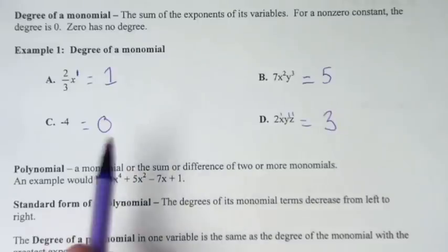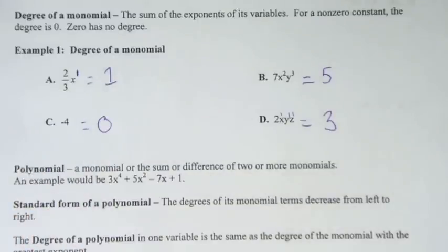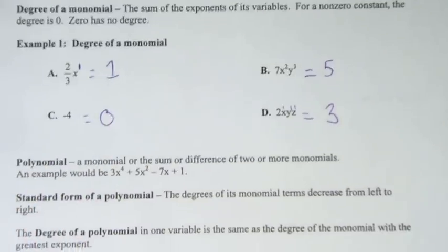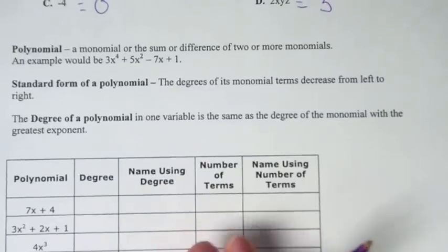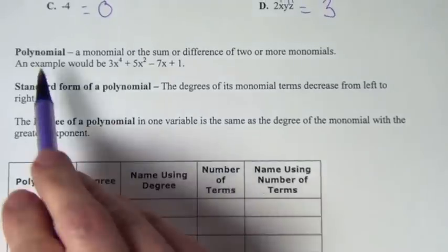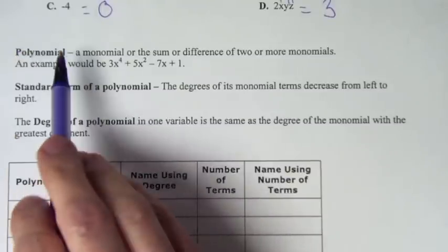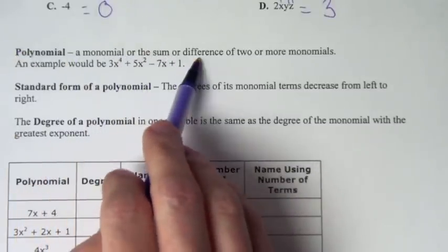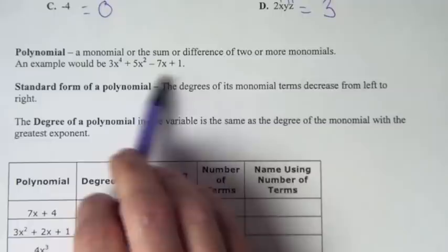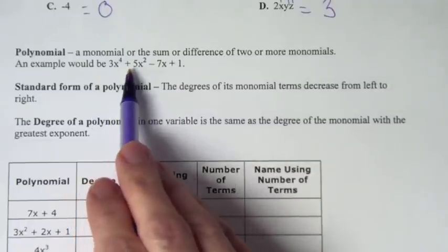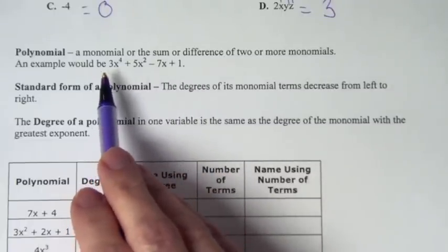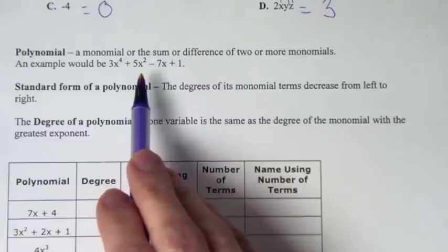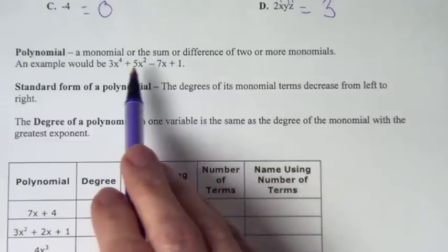Now we're going to look at what happens when we have more than one of these monomials put together. We call it a polynomial. Poly means many. This means we have the sum or difference of two or more monomials. This right here is an example of a polynomial: 3x to the 4th plus 5x squared minus 7x plus 1. This is an example of a polynomial — it's made up of four monomials.